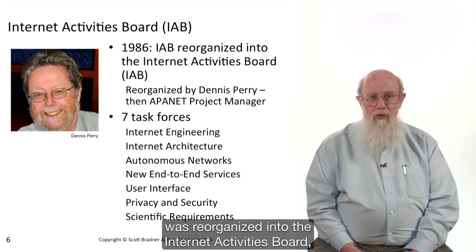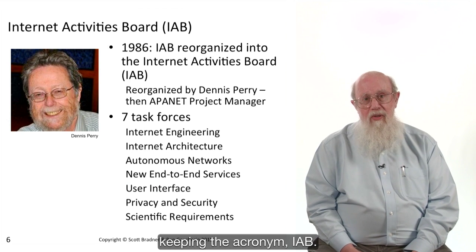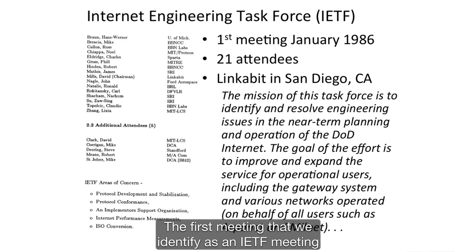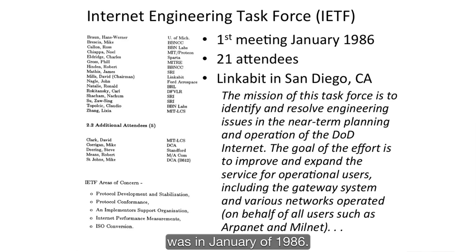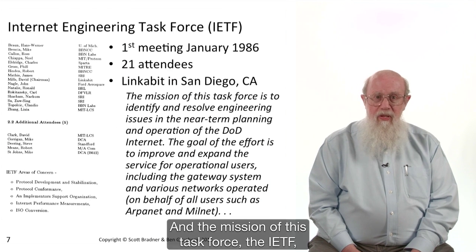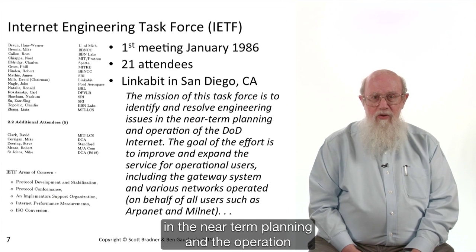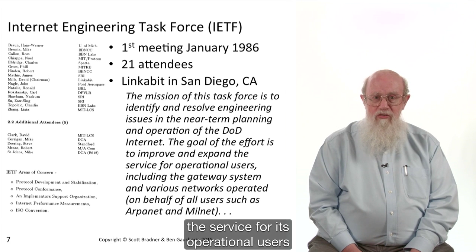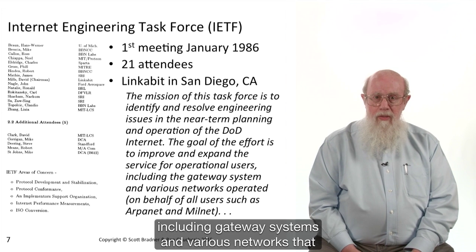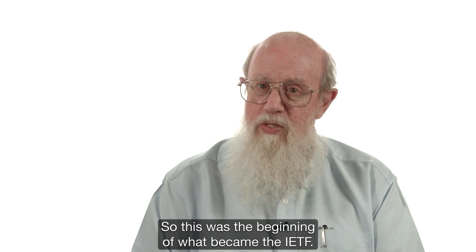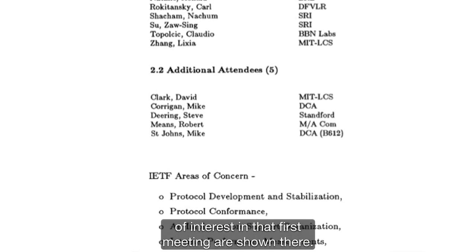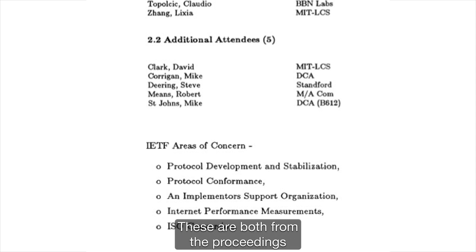In 1986, the Internet Advisory Board was reorganized into the Internet Activities Board, keeping the acronym IAB. This was done by Dennis Parry, who was then the ARPANET program manager. There were seven task forces, with Internet Engineering being one of them. The first meeting we identify as an IETF meeting was in January 1986, with 20 attendees at Linkabit in San Diego, California. The mission of this task force was to identify and resolve engineering issues in the near-term planning and operation of the DOD Internet — the TCP/IP Internet — and to improve and expand the service for its operational users, including gateway systems and networks like ARPANET and MILNET.